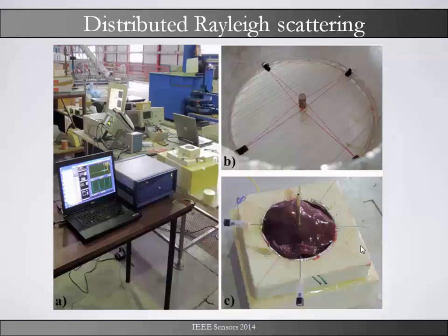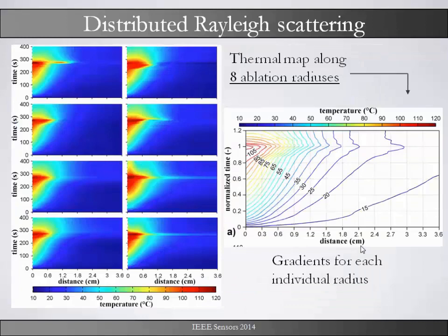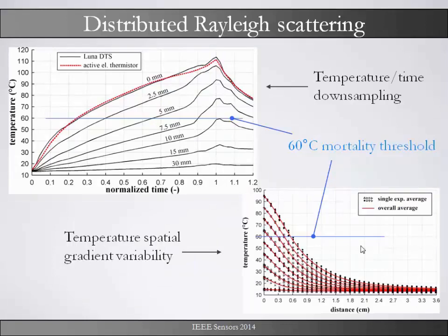Here is the big picture of it. As you can see there are eight different thermal maps showing the distribution of temperature alongside the radii, and the average overall temperature distribution. Very close to the needle, exactly at the impact point, the mortality threshold is already reached after 20% of the time. Whereas one centimeter away, we do not even reach the mortality threshold anymore.